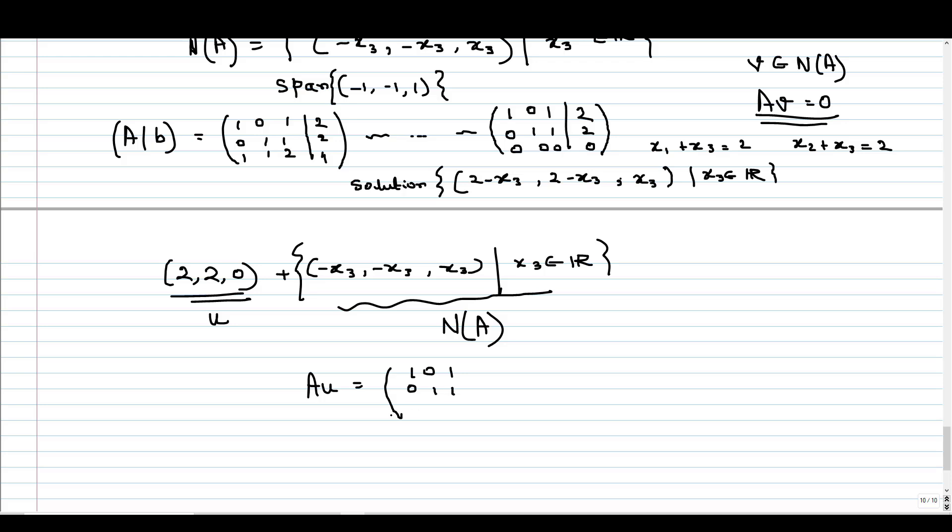If we calculate Au, our A is the matrix 1, 0, 1, 0, 1, 1, 1, 1, 2. If we multiply it with u, that is 2, 2, 0, we will get 2, 2, and 4. So this u is a solution of this system of equation. And u plus this null space is the set of all solutions. This is the solution set of our system of equation.